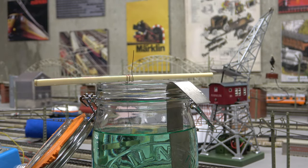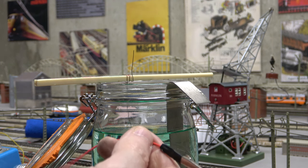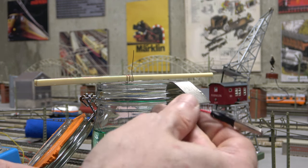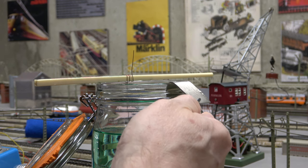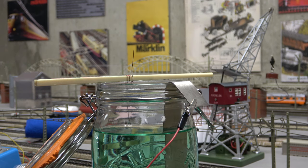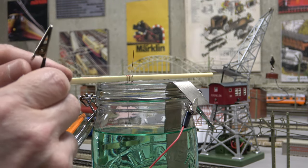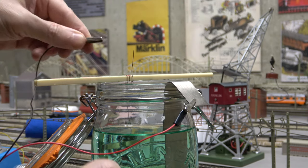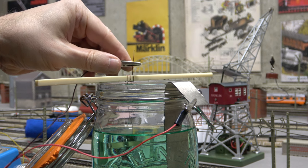Time for the crocodile clips. The positive side needs to be attached to the nickel strip. That would make it the anode in our circuit. And the negative side will need to be attached to the copper wire, itself attached to the slider, which would make it our cathode in our circuit.